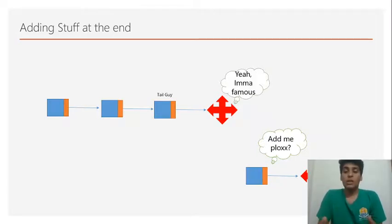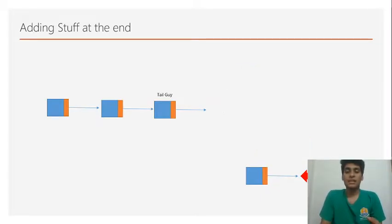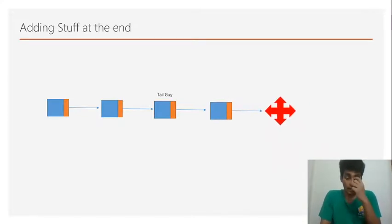So the new node actually points to null and the tail guy changes his pointer so that he can actually point to this new guy and the tail changes. So this is how you add stuff to the end.